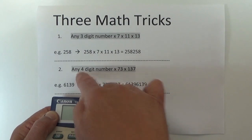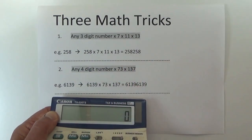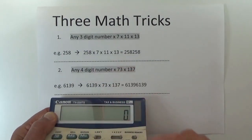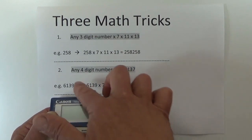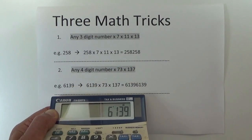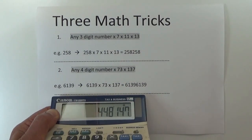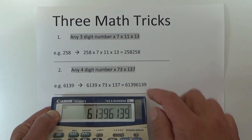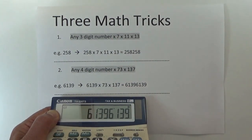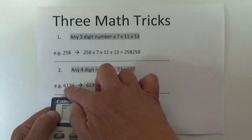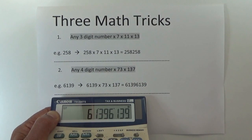The next one is where you take any four-digit number and you multiply by 73 and then multiply by 137. In the example I start off with 6139, multiply by 73, and then by 137, and the answer is 61396139 — the original number now suddenly appears twice in the answer.